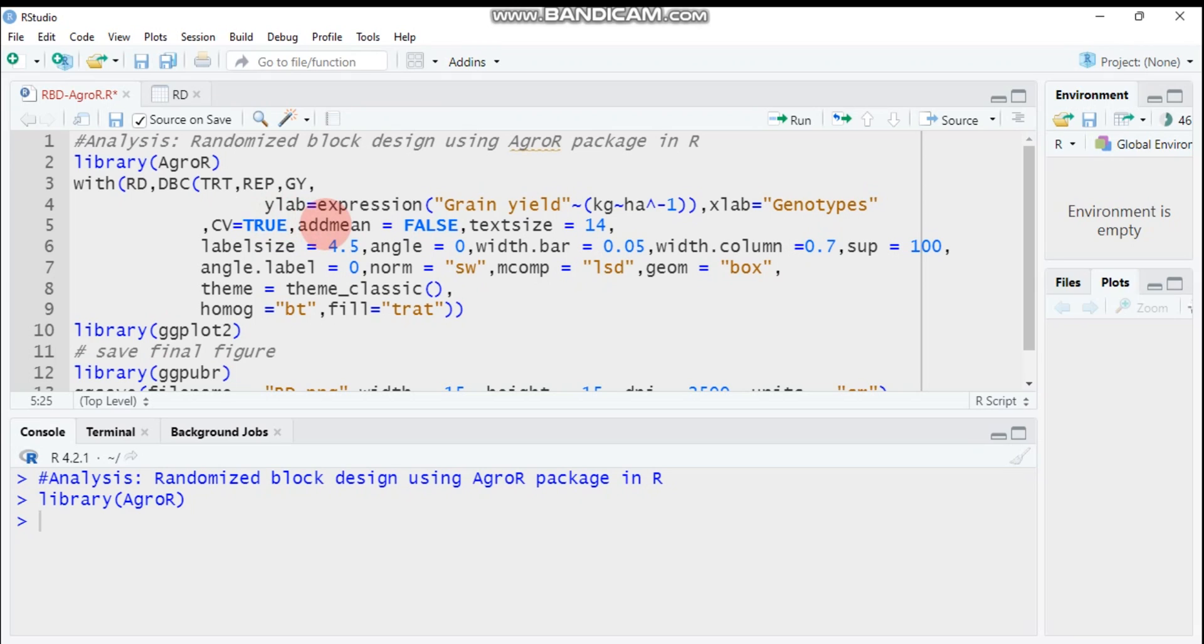Admin helps us to either display the mean value in a box plot or in a bar plot. Admin equals false means it will discard the mean value from the bar or box plots. Then text size helps us to increase the x-axis and the y-axis as well as the genotype or treatment name.